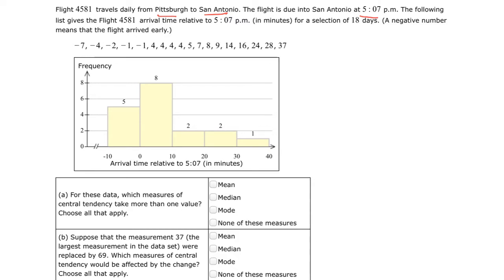So in this data, we are asked in part A, for these data, which measures of central tendency take more than one value?